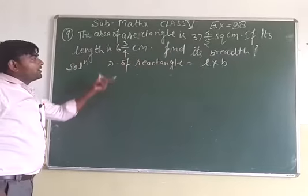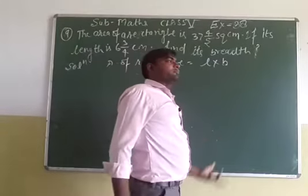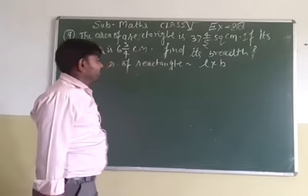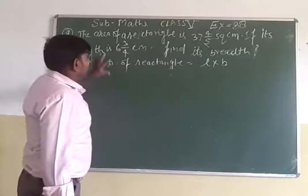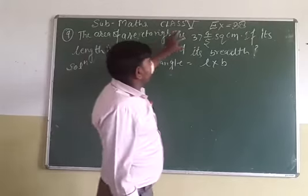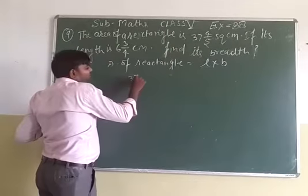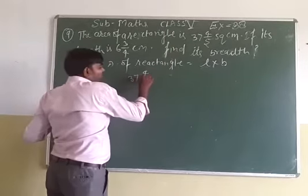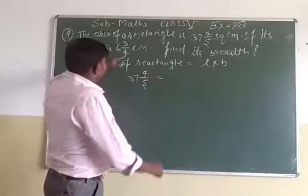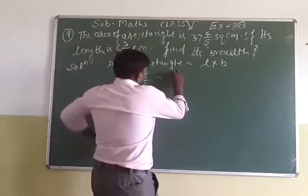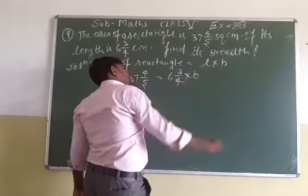We know that the area of a rectangle is equal to length into breadth. Here, area of rectangle is equal to 37 whole 4 upon 5, so 37 whole 4 upon 5 is equal to length 6 whole 3 upon 4, multiplied by breadth.